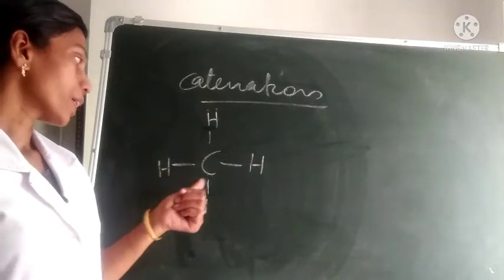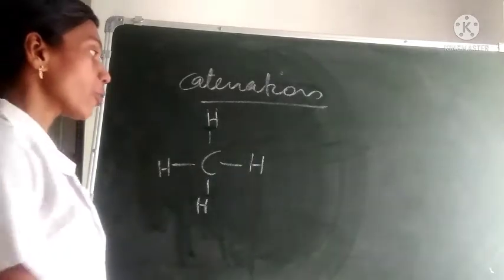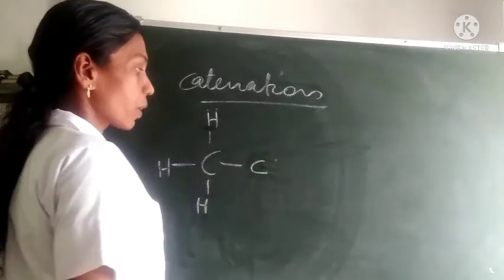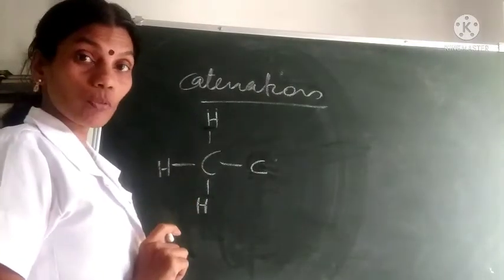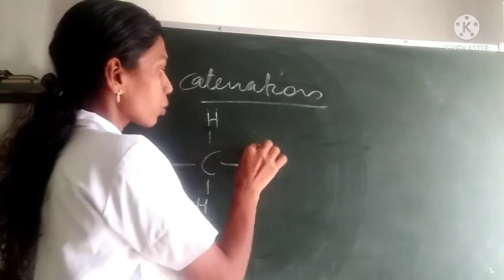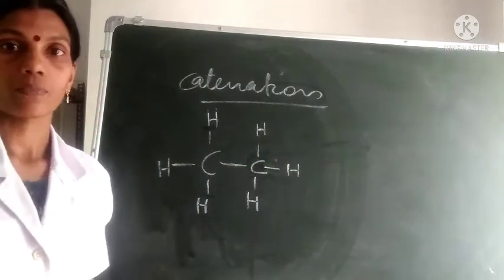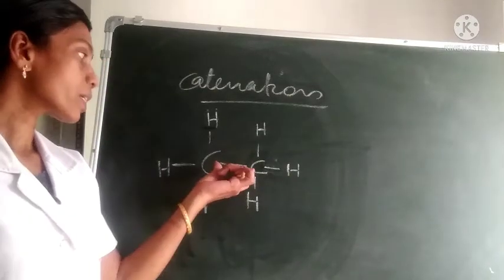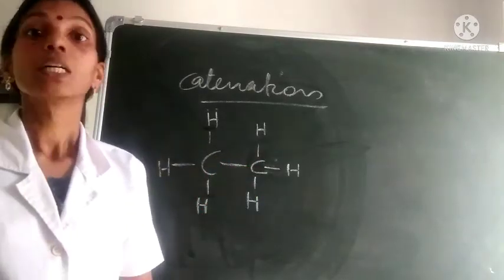Consider the compound methane, in which carbon has shared its 4 electrons with 4 hydrogen atoms. Now, instead of one hydrogen, if this carbon shares that electron with another carbon atom, we get a new compound. In the second carbon, there are also 4 valence electrons. Only 1 electron is used to bond with the first carbon, so 3 remaining electrons are shared with 3 other hydrogen atoms. We get a compound in which 2 carbon atoms are linked together. This property, in which one carbon atom is bonded with another carbon atom, is known as catenation.